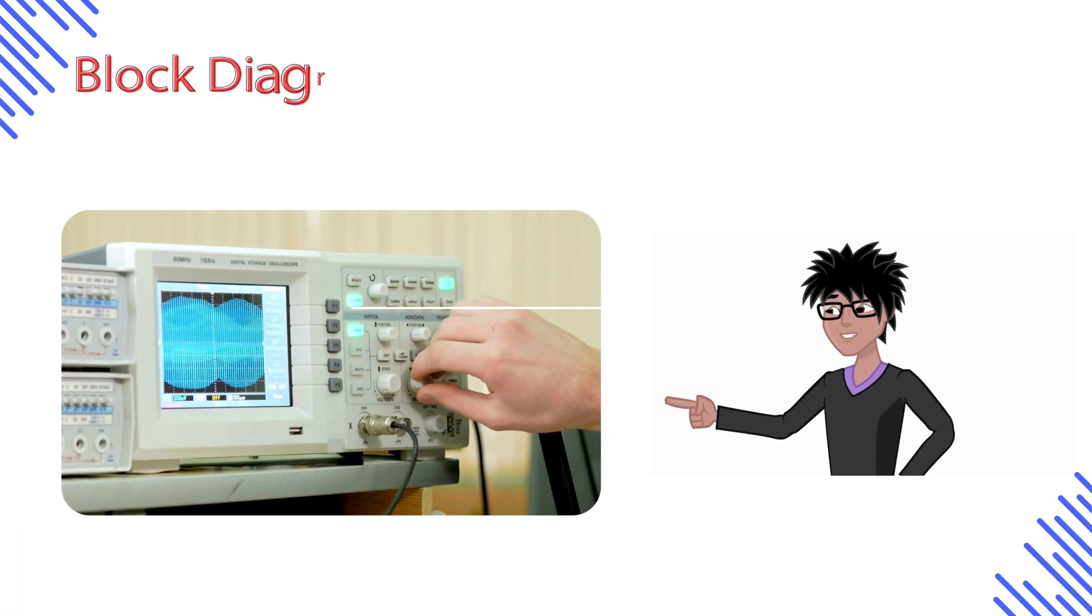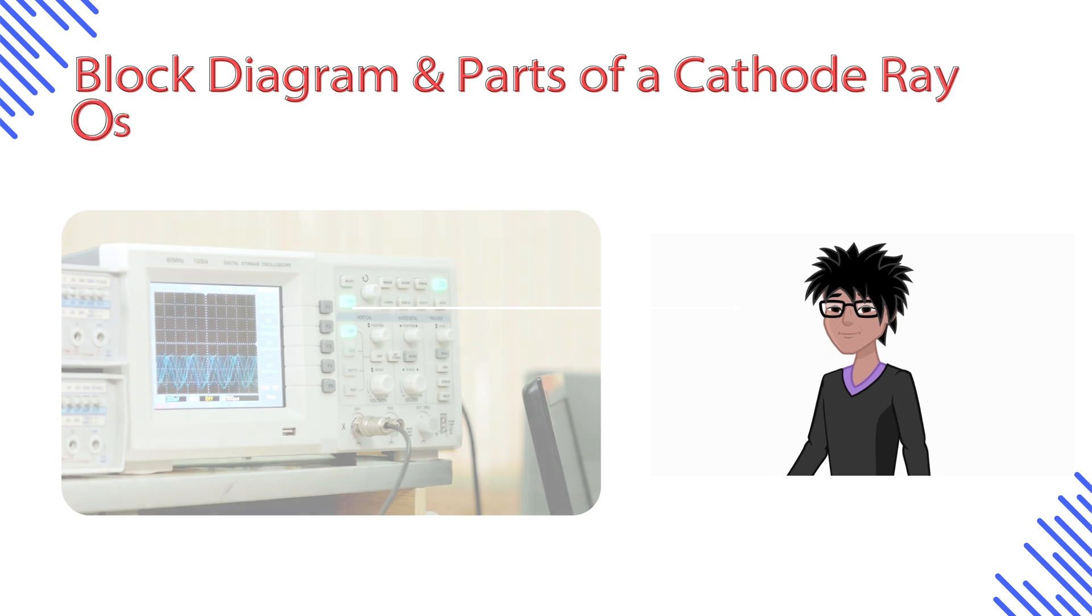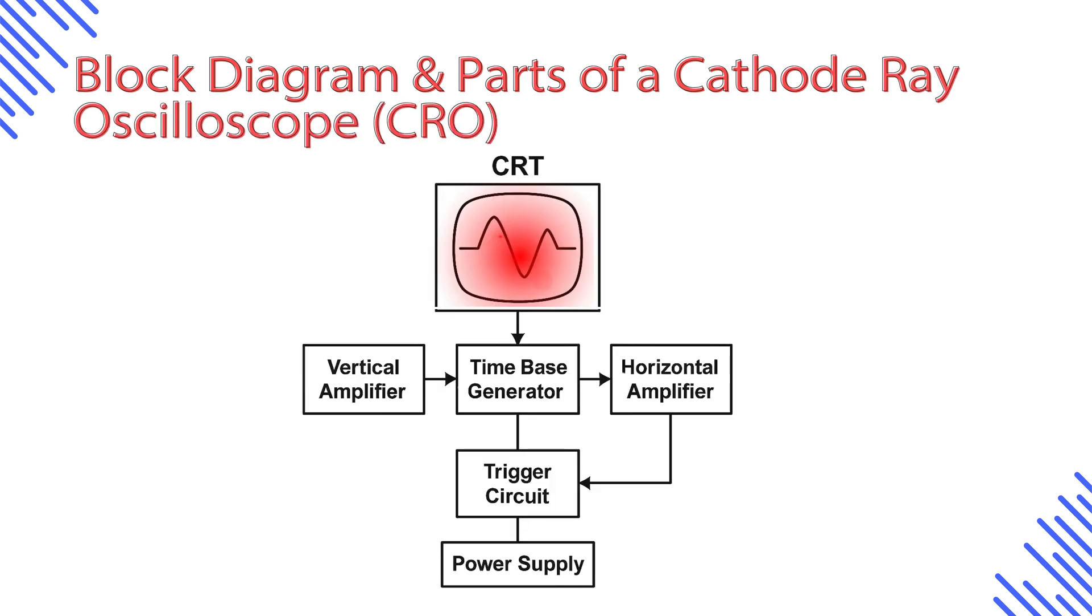Let's explore the key components of a cathode ray oscilloscope. A CRO consists of six main blocks, each performing a unique role.